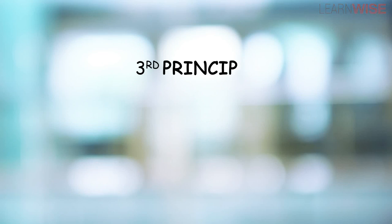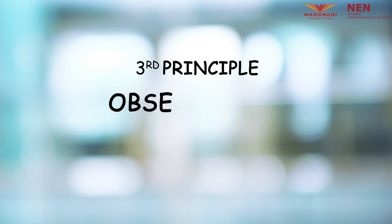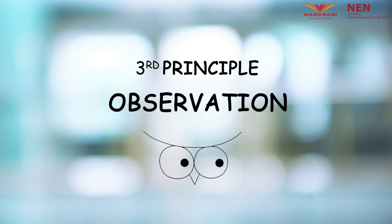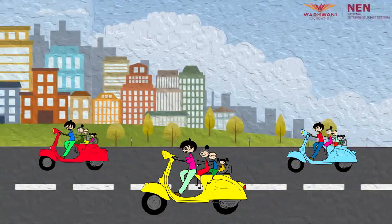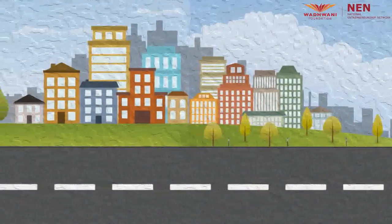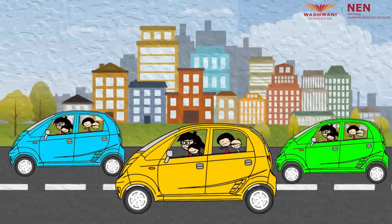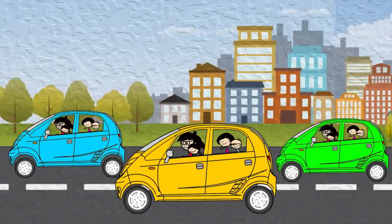So guys, can you all identify the principles of design thinking in this story? Yes — empathy, user-centeredness. And here is the third principle now: observation. These very principles brought to the Indian roads a small car called Nano that was affordable for the scooter-owning family.